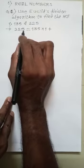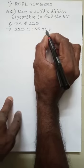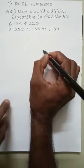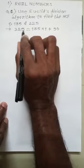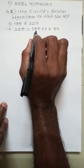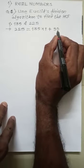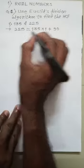So 225 is not completely divisible by 135, and the remainder is 90. Now for the second step.